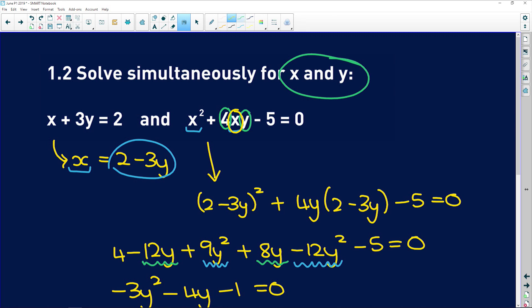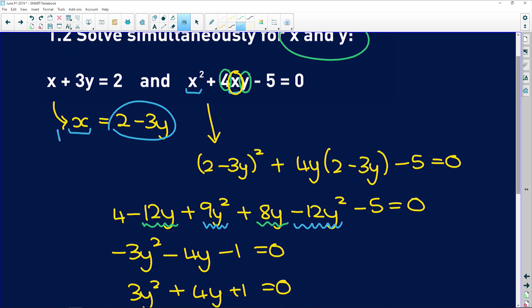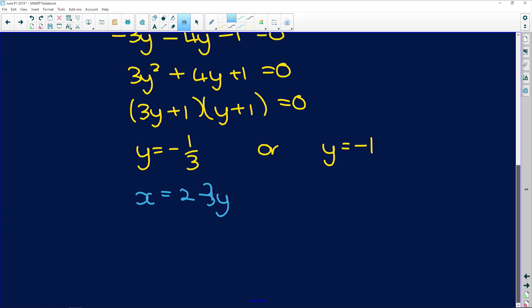So now what you need to do is go and substitute your y values back into an equation. I'm going to use this one over here, so x is equal to 2 minus 3y.